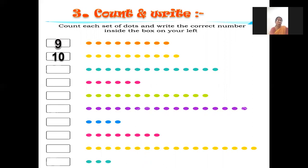What will come now? 2, 3, 4, 5, 6, 7, 8, 9, 10, 11, 12, 13, 14. Next: 1, 2, 3, 4, 5, 6, 7, 8, 9, 10, 11, 12, 13. Next: 1, 2, 3, 4, 5, 6, 7, 8, 9, 10, 11, 12, 13, 14, 15, 16, 17.